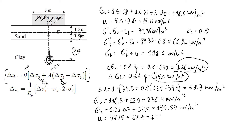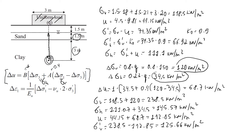Finally, the new effective stresses: the new effective vertical stress is total vertical stress minus new pore pressure = 238.5 − 112.85 = approximately 125.66 kN/m². The new effective horizontal stress is 145.57 − 112.85 = approximately 32.72 kN/m².